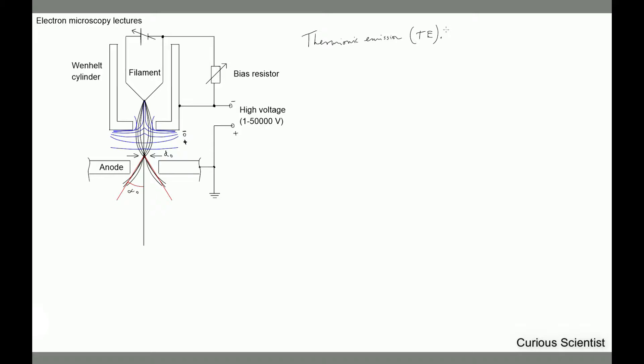What happens in the gun is that we run current through the filament, which makes it hot — really hot. Due to this temperature rise, the electrons become energetic enough to overcome the work function, which is basically the energy needed for electrons to leave the surface of the material. Once these electrons escape, we use an electrostatic field which pulls the electrons from the vicinity of the filament surface, accelerates them, and interacts with them in many different ways.